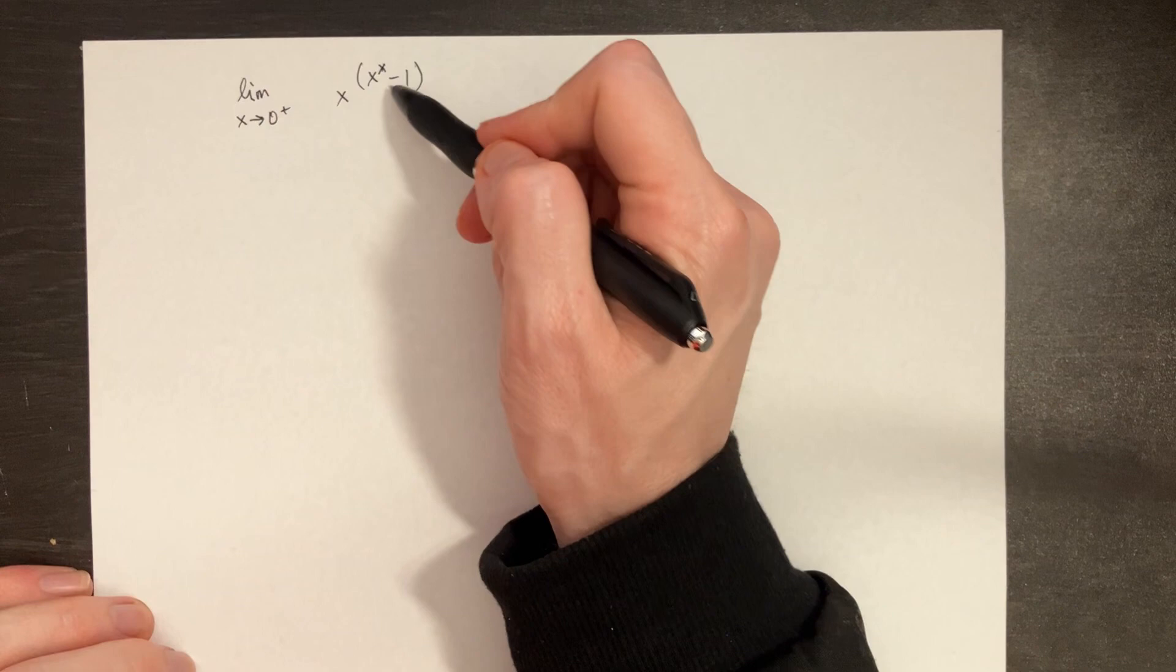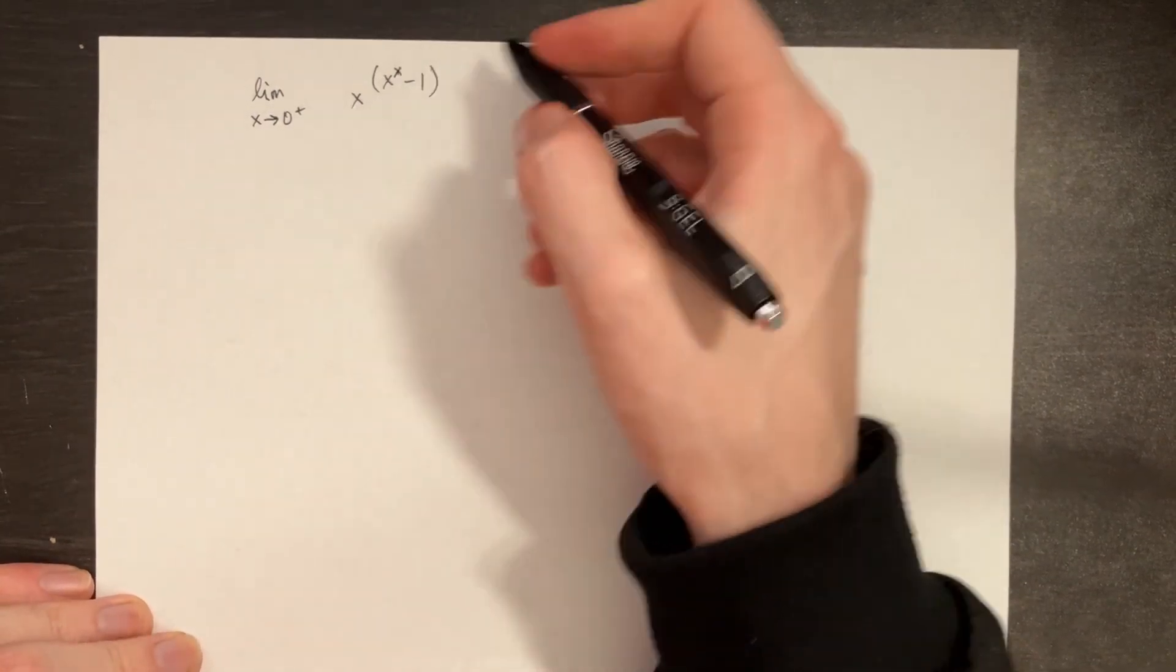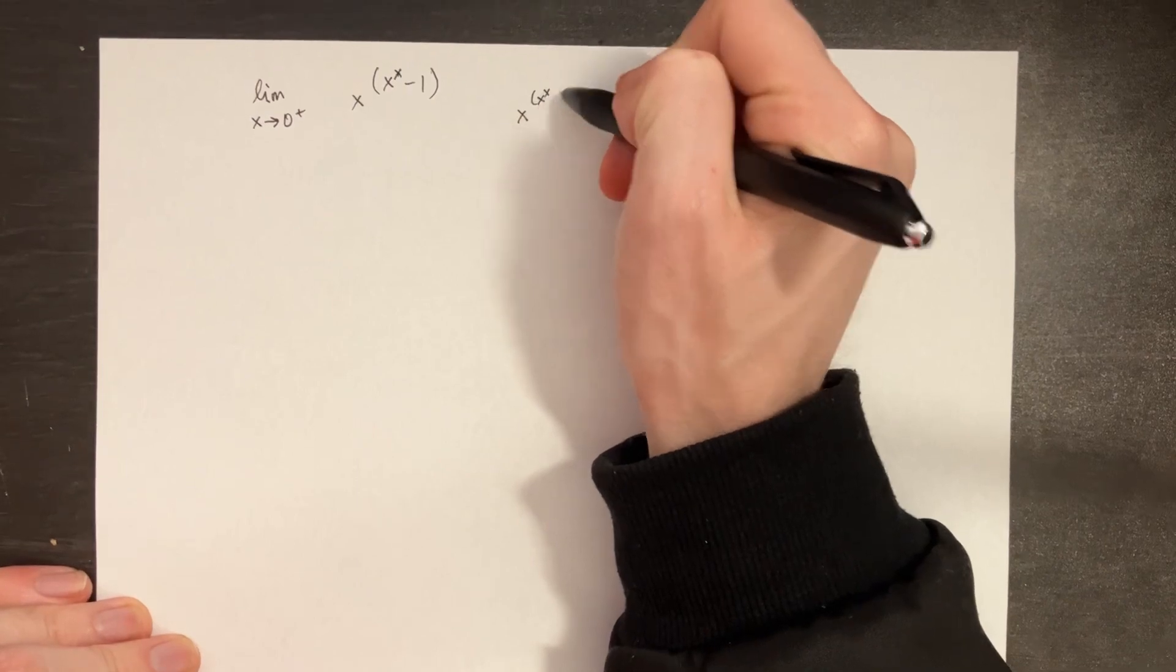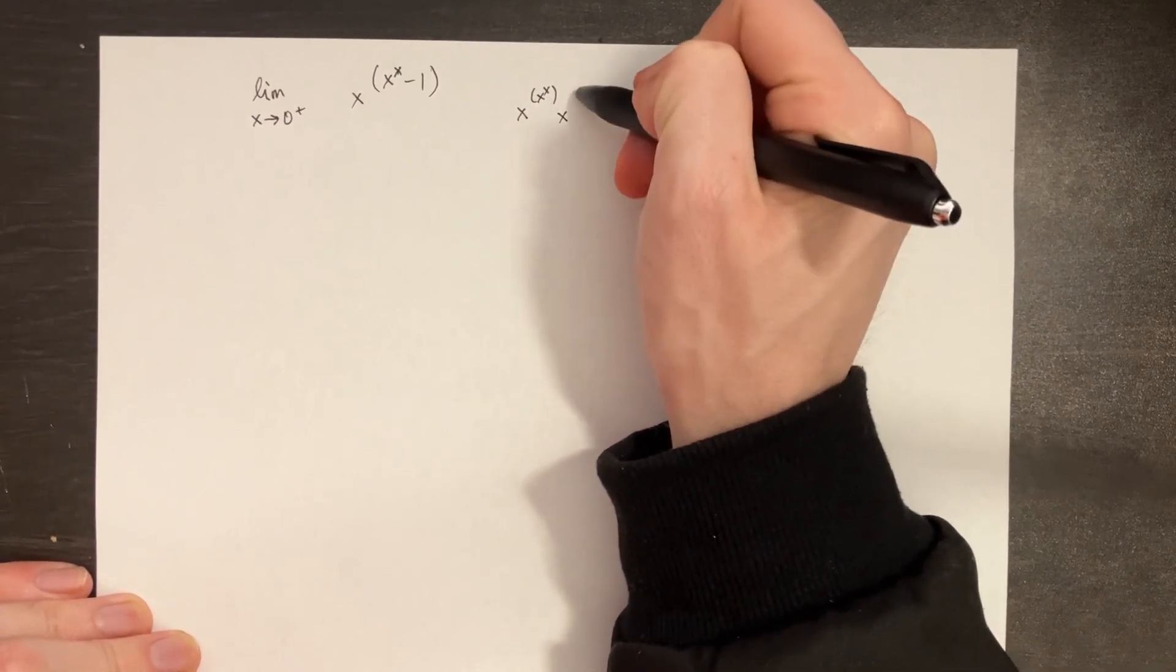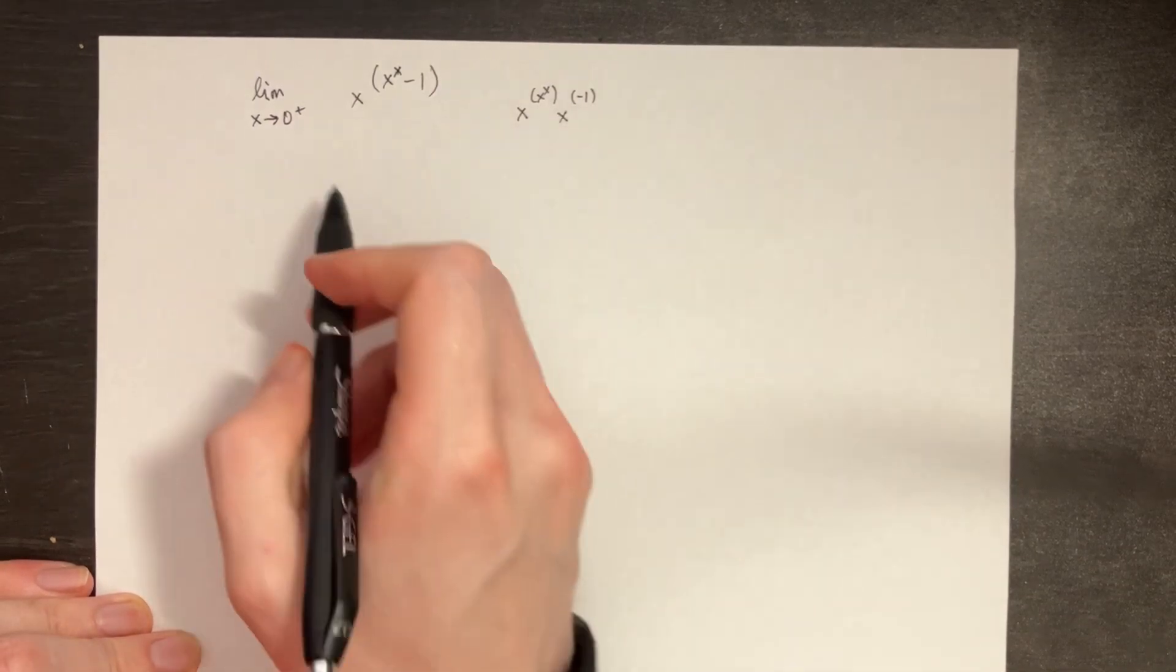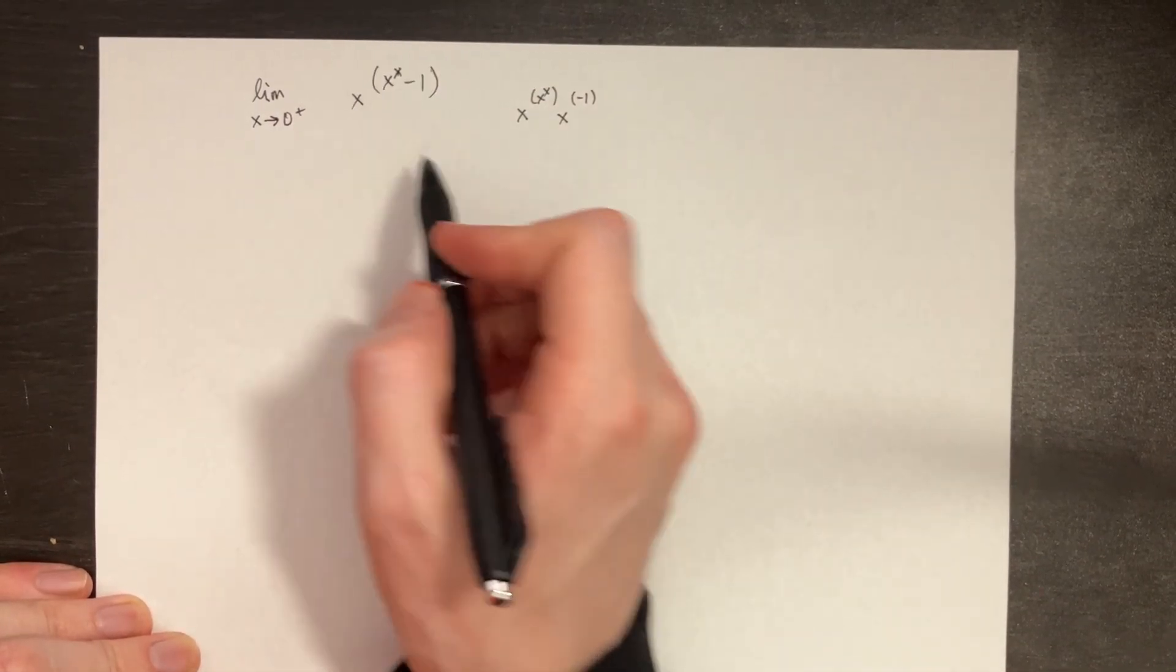We have x to the power of x to the x minus 1, and we should be able to rewrite this something like x, and then we'll have x to the power of x, and we put x to the power of negative 1 here. Essentially, we're just multiplying these two things together.